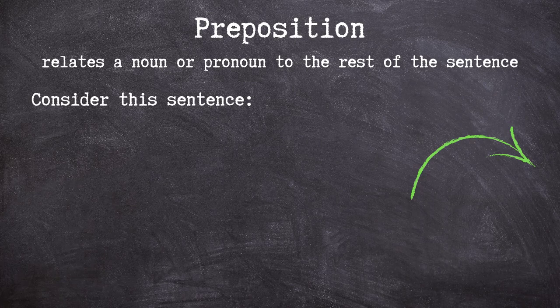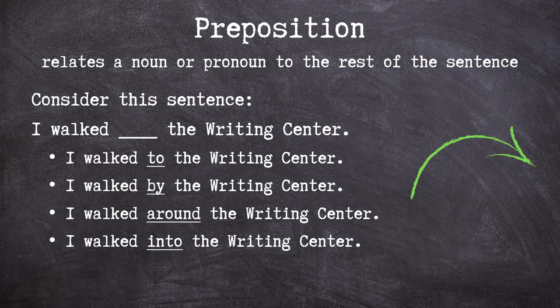Ultimately, a preposition's job is to relate a noun or pronoun to the rest of a sentence. Consider this sentence: I walked blank the writing center. Like our examples from the list earlier, filling that blank with different prepositions — to, by, around, and into — creates a different relationship or depiction of location or movement between I and writing center.